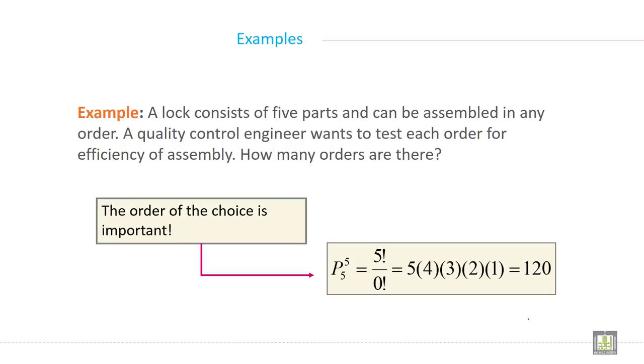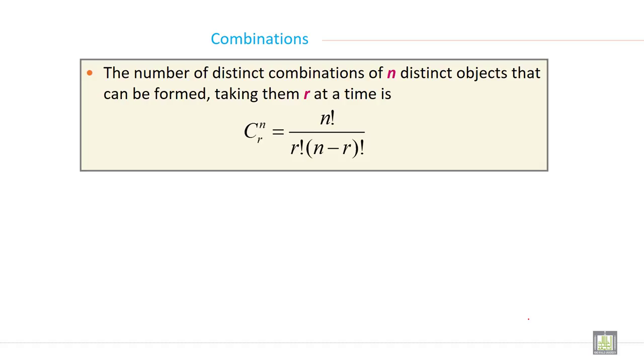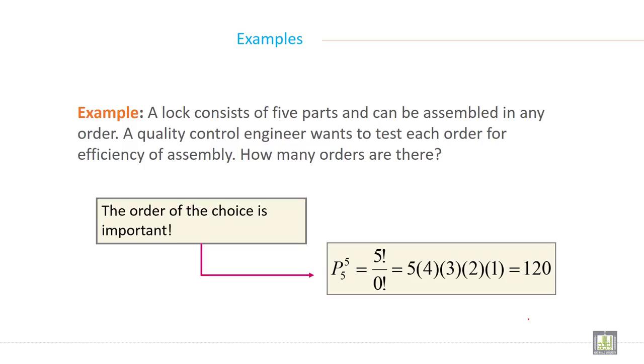A log consists of 5 parts and can be assembled in any order. A quality control engineer wants to test each order for efficiency of assembly. How many orders are there? The order of the choice is important. P5,5 equals 5 into 4, equals a total of 120.